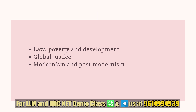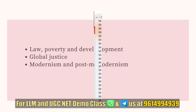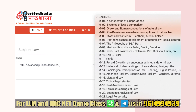The last portion of the syllabus covers law, poverty, global justice, and modernism. These topics belong to advanced Jurisprudence. You can refer to some research articles or simply visit the EPG Paatshala website, where under the paper of advanced Jurisprudence you can find these topics. Just have a rough overview of these topics to get the idea.